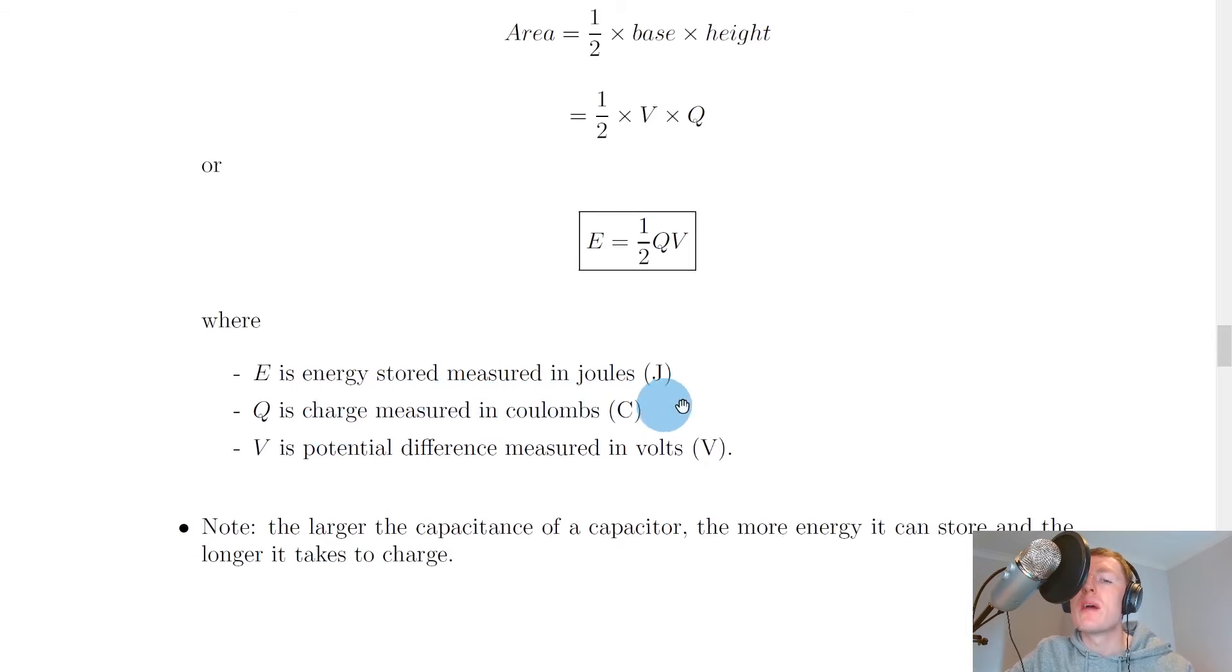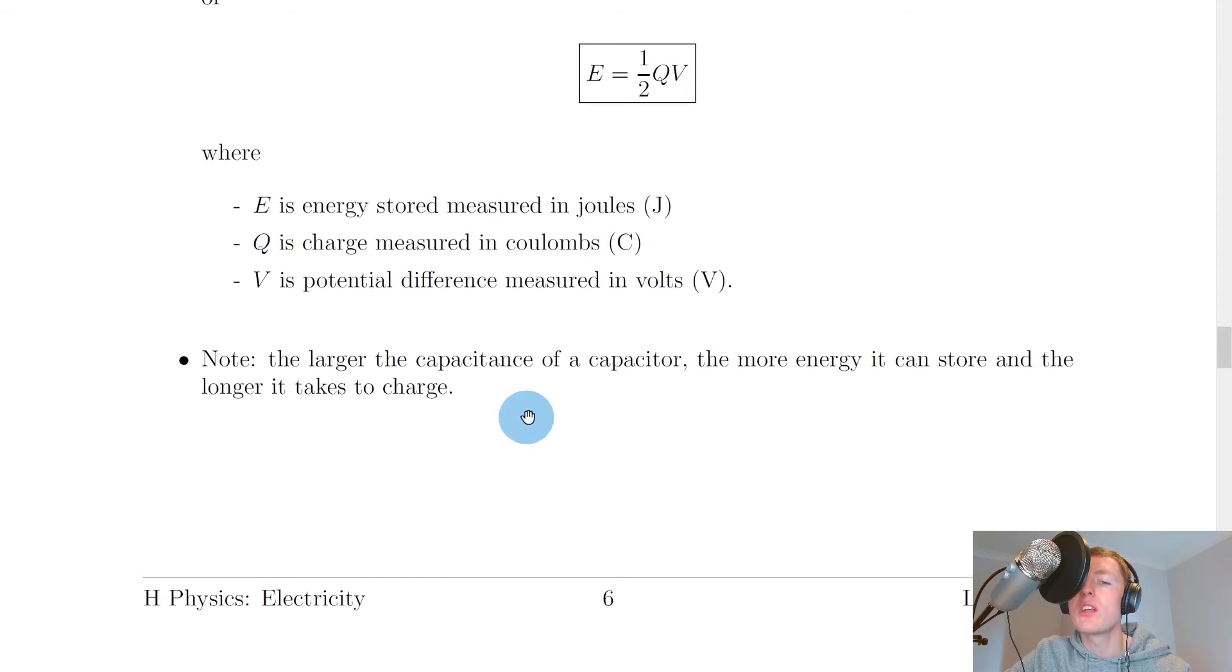Where e is the energy stored measured in joules, q is the charge measured in coulombs, and v is the potential difference measured in volts. Note the larger the capacitance of a capacitor, the more energy it can store, and the longer it takes to charge.